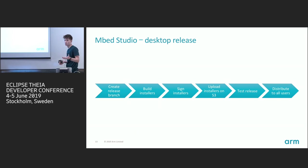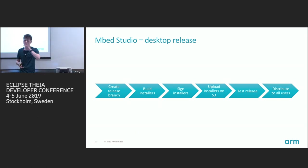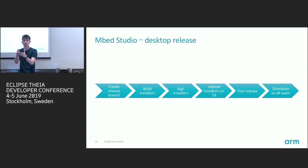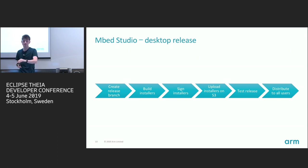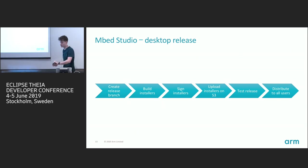Once we decide it's good to go, we distribute to all users. The process is simple: all the files are already on S3, so we run a script that copies them to the path users can access, and also copies the small version file used by the auto-updater. After that final step, users with the old version are automatically updated on the next startup of Mbed Studio.